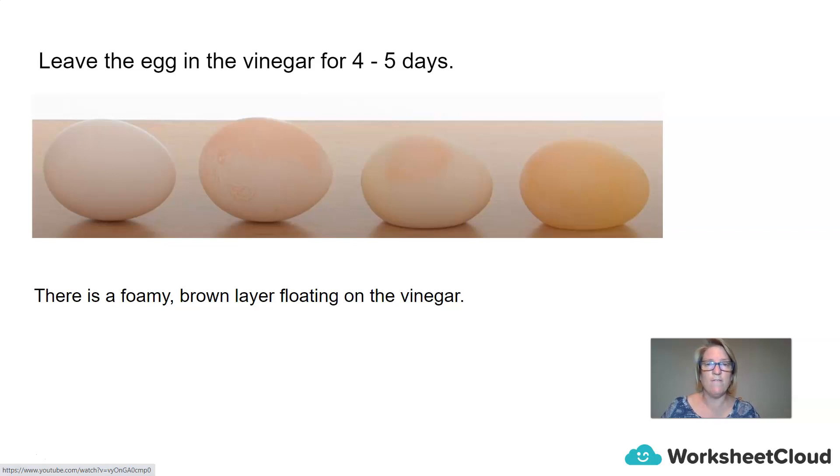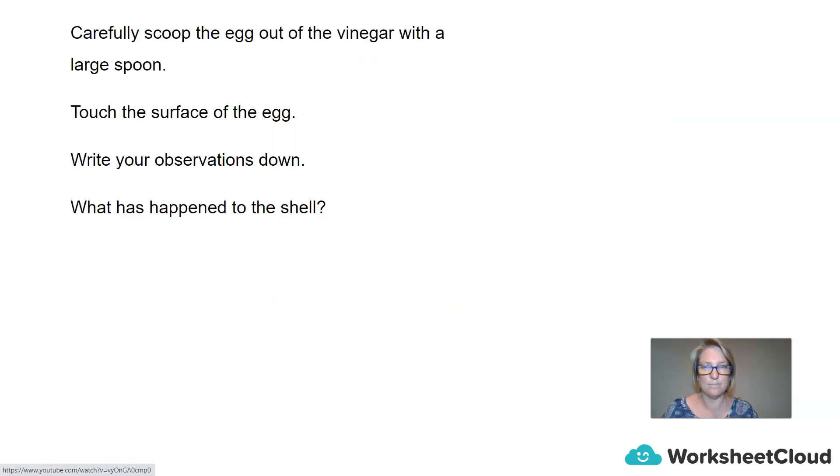So if we leave the egg for four to five days this is what we should see on about day four. And then in the container you should find that there may be a brown foamy layer floating on the vinegar. Carefully scoop the egg out of the vinegar with a spoon. Touch the surface of the egg and write down your observations. What has happened to the eggshell?